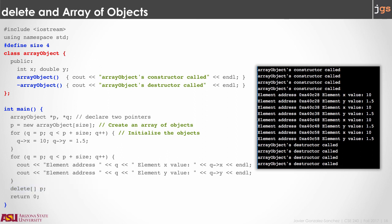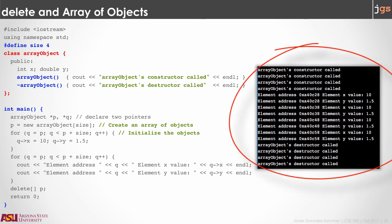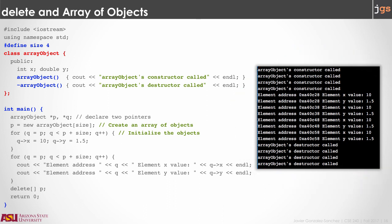Before continuing with the next video, I recommend you play with this source code and make sure you understand every single line. There is a pointer for the array and another pointer used inside a for loop. We are printing the address of the objects in the array and the values of each variable inside each object, as well as the calls to constructors and destructors. Review this and see you in the next video.